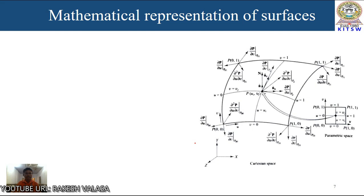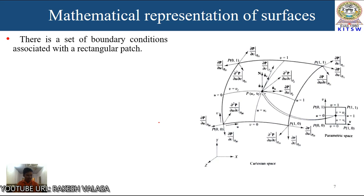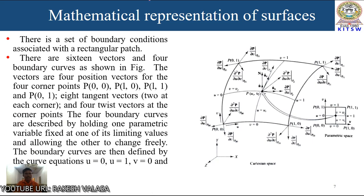Let us take one rectangular patch. There is a set of boundary conditions associated with a rectangular patch. This patch is developed by 4 boundary curves. There are 16 vectors: 4 position vectors for the 4 corners — p(0,0), p(1,0), p(1,1), and p(0,1) — and 8 tangent vectors, with each corner having 2 tangent vectors in the u and v directions.